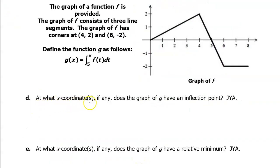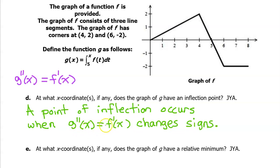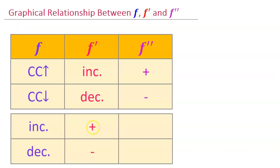Part D. At what x-coordinates, if any, does the graph of g have an inflection point? A point of inflection will occur when g double prime changes signs. Remember that g prime equals f of x, so g double prime equals f prime of x. Since g double prime equals f prime, a point of inflection occurs when f prime changes signs. But we don't have a graph of f prime — we have a graph of f. So how can we see where f prime changes signs? f prime is positive when f is increasing, and f prime is negative when f is decreasing. So f prime changes signs when f goes from increasing to decreasing, or from decreasing to increasing.